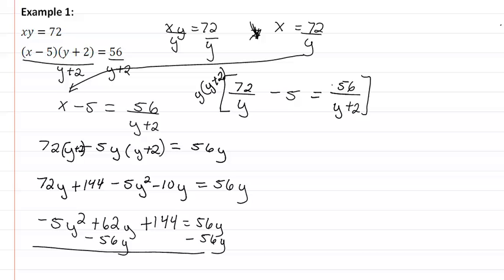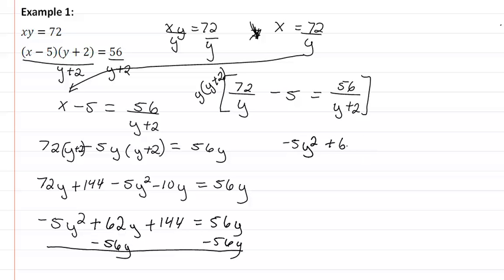So now what I have is negative 5y squared plus 6y plus 144 equals zero. We're going to throw this into our quadratic formula.